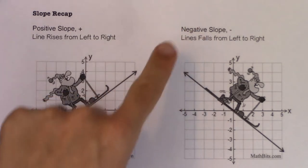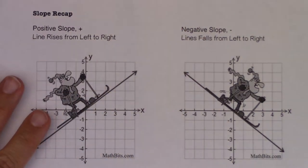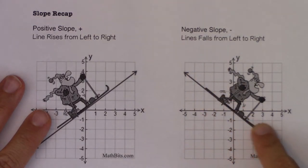If you have a negative slope, your line will fall as you move left to right, so your line would be decreasing.